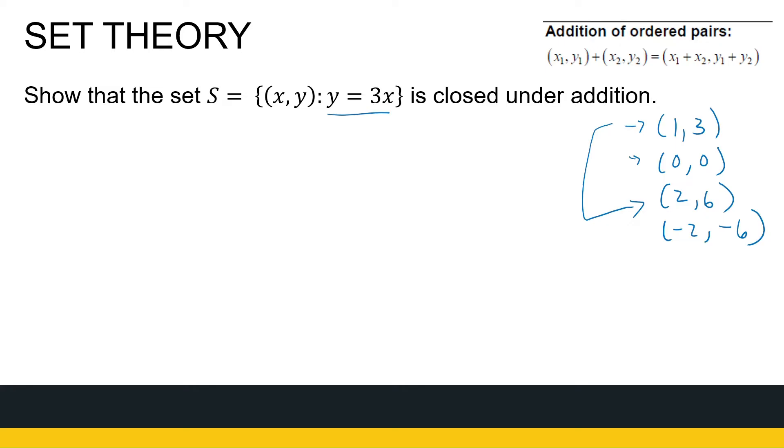So it looks like if I look at these elements that I generated, if I add any two together, it seems like I end up in the set S again. So how are we going to prove this formally?